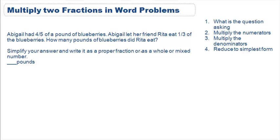The word problem states Abigail had four-fifths of a pound of blueberries. Abigail let her friend Rita eat one-third of the blueberries. How many pounds of blueberries did Rita eat?